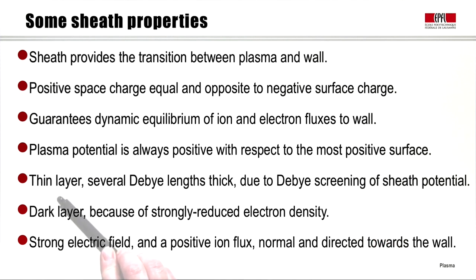The sheath layer is thin, it's only several Debye lengths thick due to Debye screening of the sheath potential. The sheath is a dark layer because there is a strongly reduced electron density in the sheath, not because the electrons are colder, but because there are very few electrons. As we've already seen, there is a strong electric field and therefore a positive ion flux which is perpendicular and directed towards the wall.